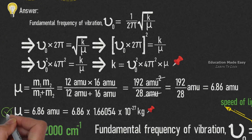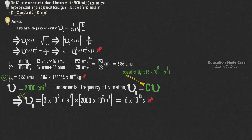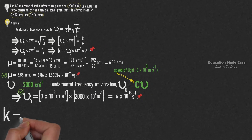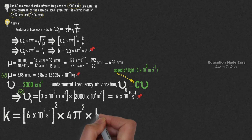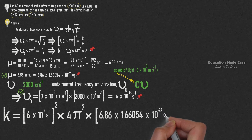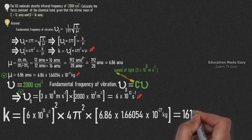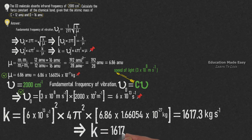Now, substituting the values of μ and μ₀ into the equation for k: k = (6 × 10¹³ s⁻¹)² × 4π² × 6.86 × 1.66054 × 10⁻²⁷ kg = 1617 kg/s². Converting to SI units, k = 1617 N/m.